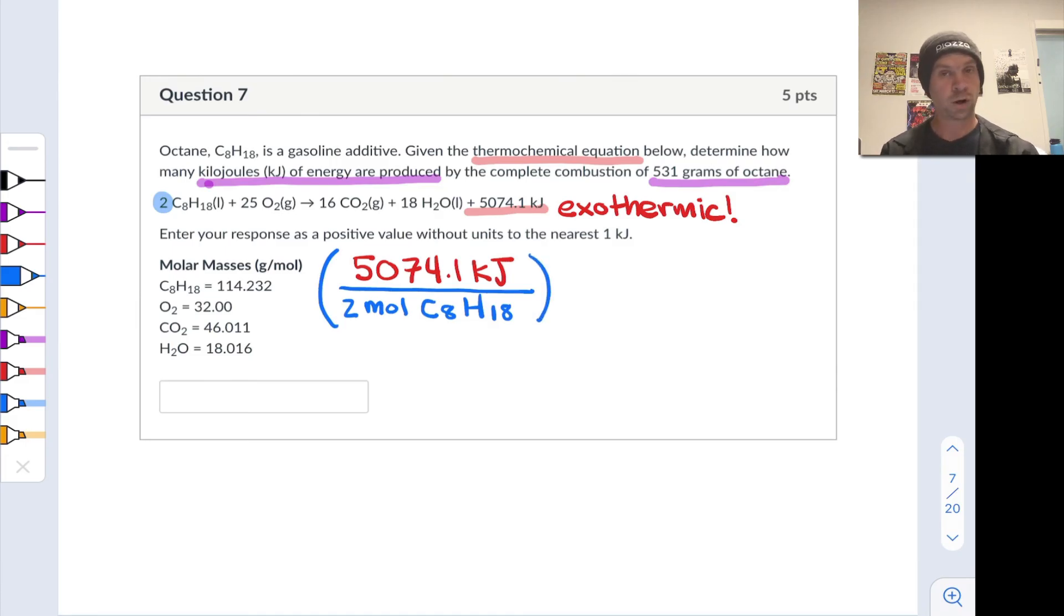I'm given a quantity of octane, and so I can immediately say that 531 grams of octane—well, that's not going to work directly. But if I can convert that to moles, then I'm in business, and I can do that conversion using the molar mass of octane, which is given here. It's 114.232 grams in one mole of this stuff.